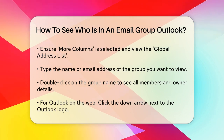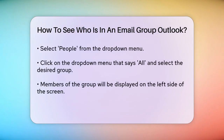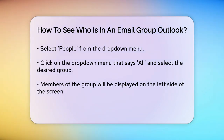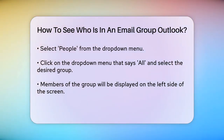If you're using Outlook on the web, the process is a bit different. You need to click on the down arrow next to the Outlook logo in the top left corner and select People. In the People window, click on the drop-down menu that says All near the top left, and select the group you want to view. This will display all the contacts within that group on the left side of the screen.